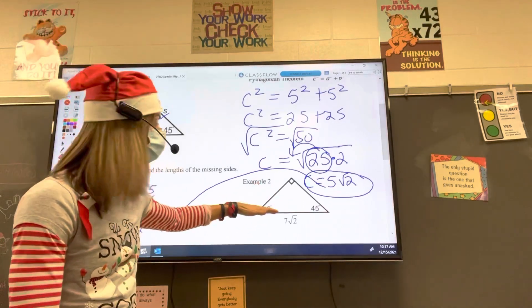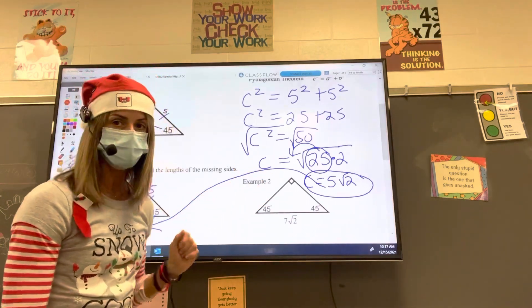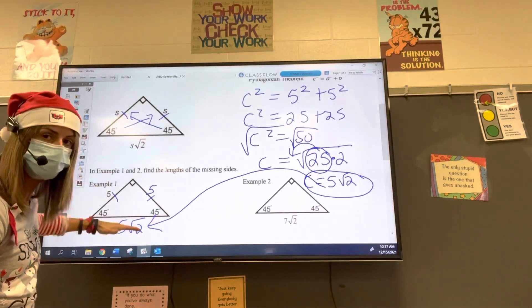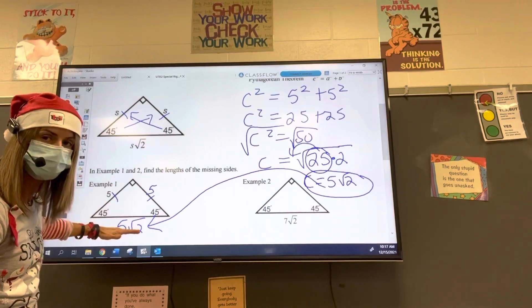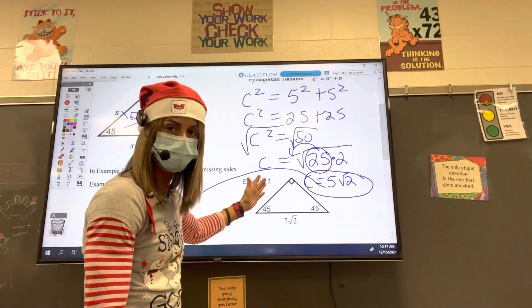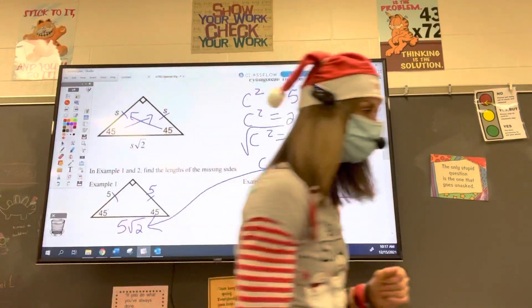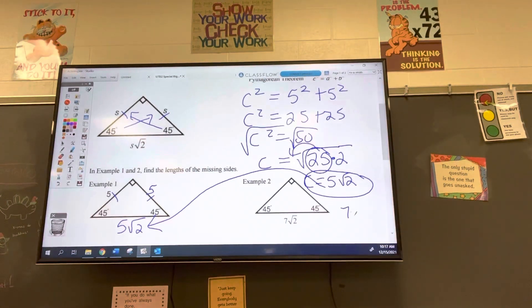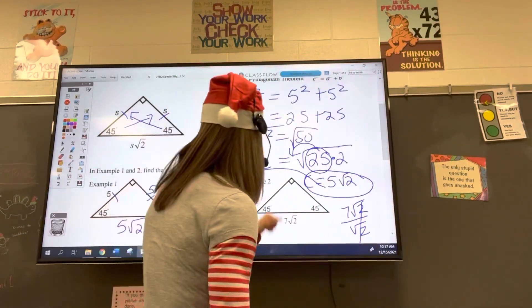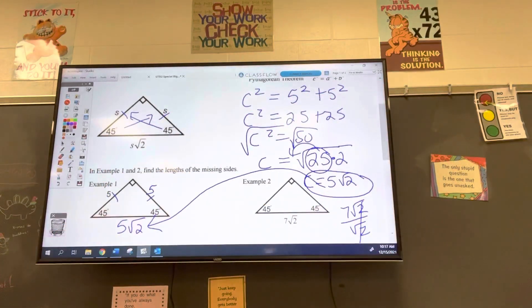Example 2. Now we're being given the hypotenuse and we're asked to find the lengths of the sides. So again, to go from the length of the side to the hypotenuse, we are multiplying by the square root of 2. So to go from the hypotenuse to the length of the side, we are dividing by the square root of 2. This one's kind of nice because 7 root 2 divided by root 2, that's just going to give us 7. So it's 7, 7, done.